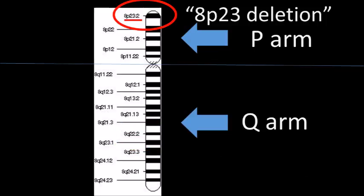If you hear about a condition called 8p23 deletion, that means on chromosome 8 the short arm p is missing part of the chromosome at that section called 23.